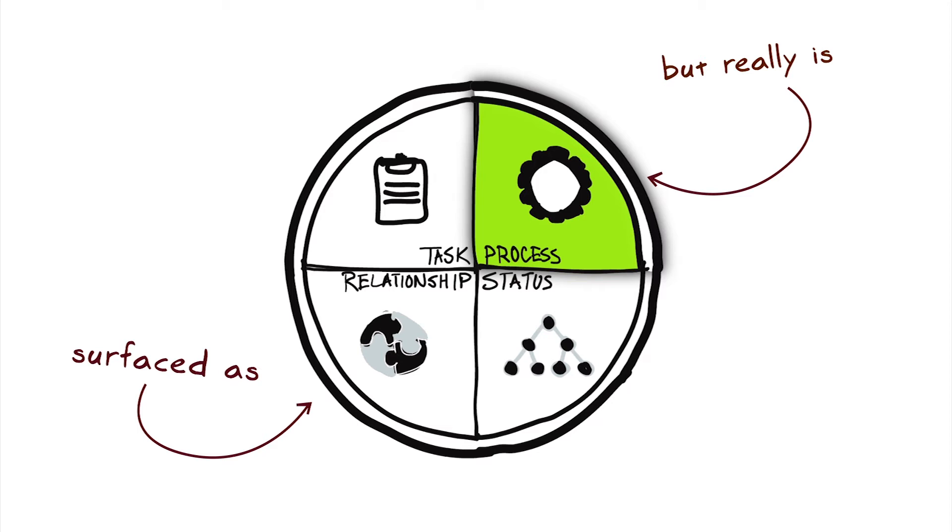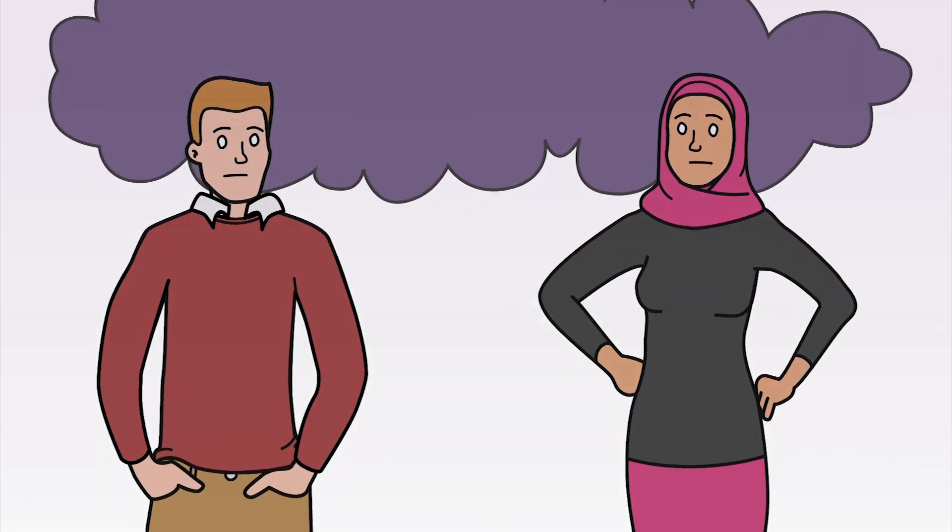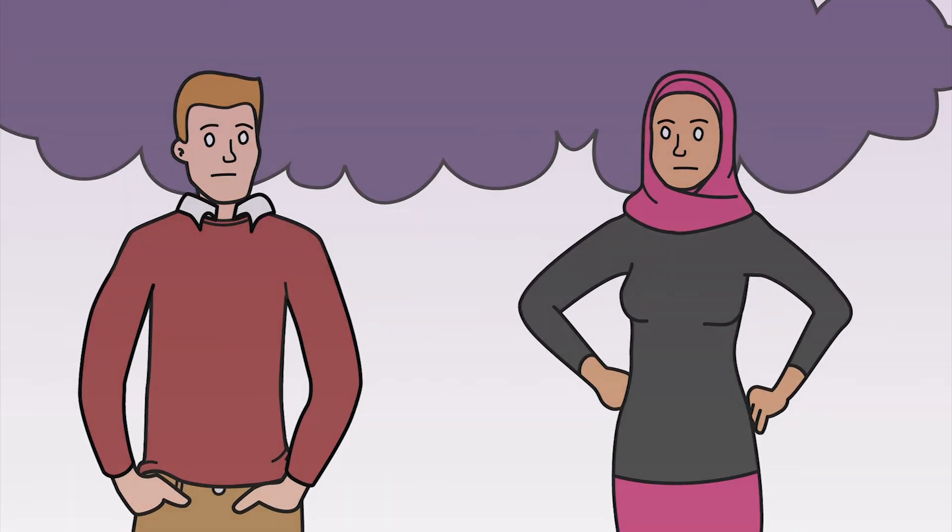They both had a similar goal, efficiently managing data, but disagreed on the process. And the next thing we know, Nala calls Jake's method outdated and the relationship conflict spirals.